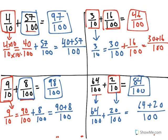That is how you add two fractions when one has a denominator of 10, the other has a denominator of 100. Remember, you always have to get common denominators before you can add or subtract two fractions.